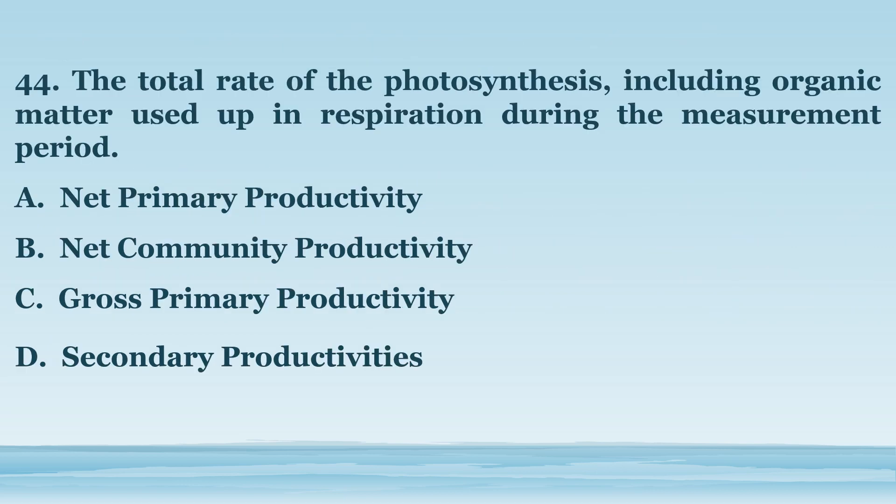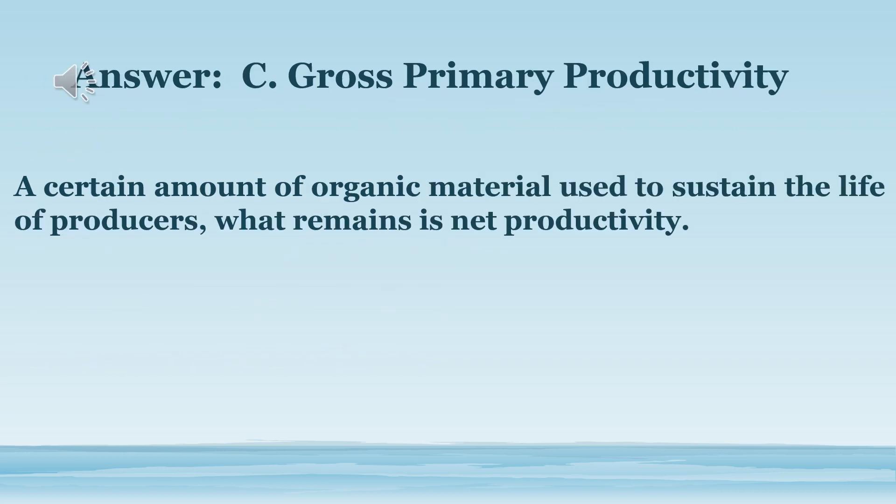Number 44. The total rate of photosynthesis, including organic matter used up in respiration during the measurement period. A. Net primary productivity. B. Net community productivity. C. Gross primary productivity. D. Secondary productivity. The answer is letter C. Gross primary productivity. A certain amount of organic material is used to sustain the life of producers; what remains is net productivity.